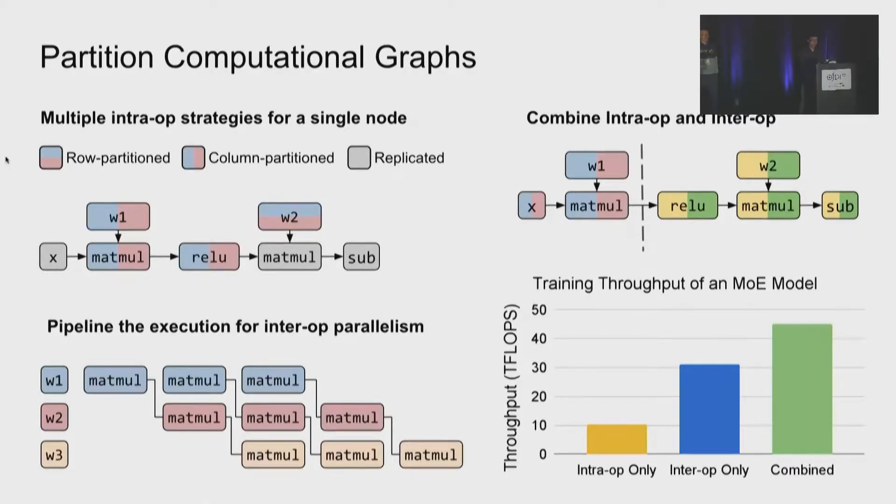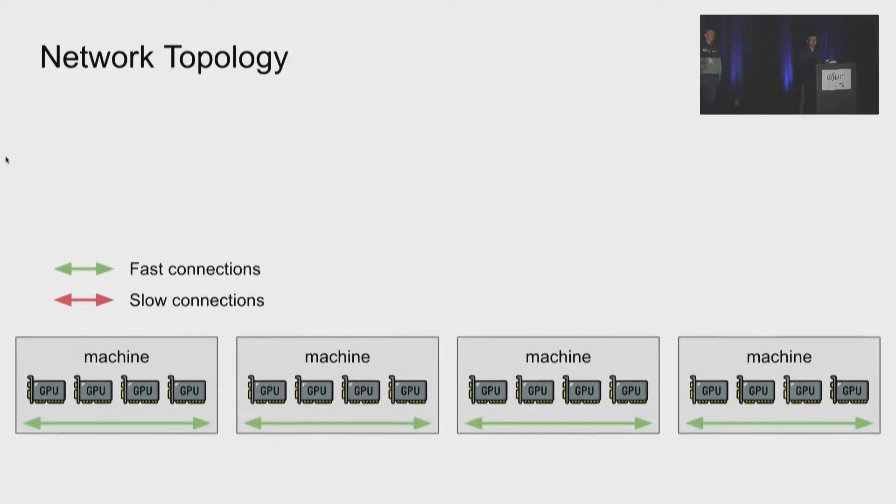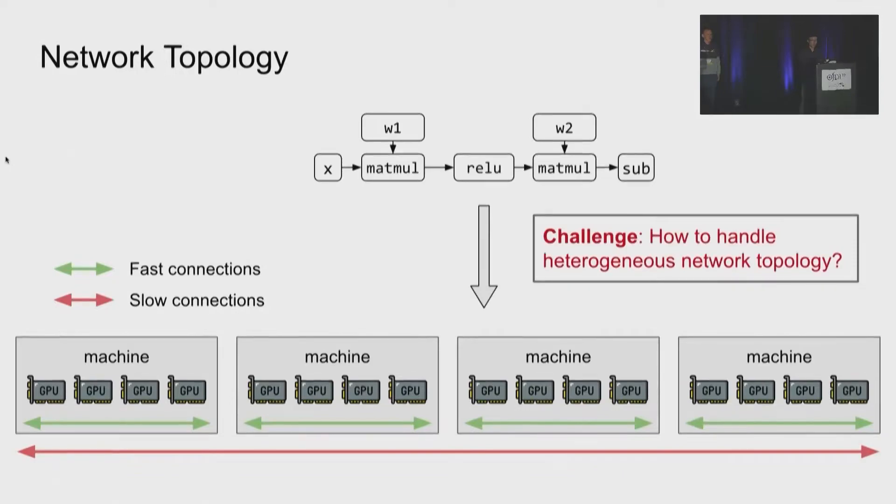However, this is still not the only tricky part. The next tricky part is how to map the partitions to actual devices. After partitioning the graph, we have to map the partition to devices. So here is one GPU, it's definitely not enough for training large models. So I get a machine with four GPUs and more machines with more GPUs. Here comes the tricky part. The network used to connect these machines to a two-level hierarchy where we have fast connections for GPUs inside the node and slower connections across different nodes. So the challenge here is how to map the graph partitions to this two-level hierarchy. As you can see, this problem is very challenging but very important.